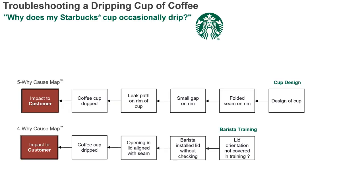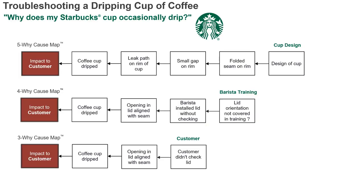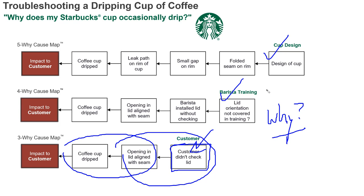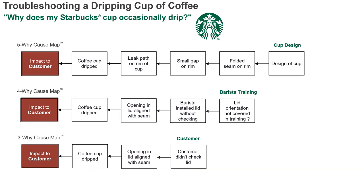If we added another perspective: someone else could say the reason the cup dripped is because the opening obviously aligns with the seam, and that's because the customer didn't check it. Even if the cup is designed this way and even if the barista's training was lacking, some people just know to check and make sure the opening in the lid is 180 degrees from the seam — and then it never leaks. So depending on who you ask, you get different explanations: is this a design issue, a training issue, or a user issue?